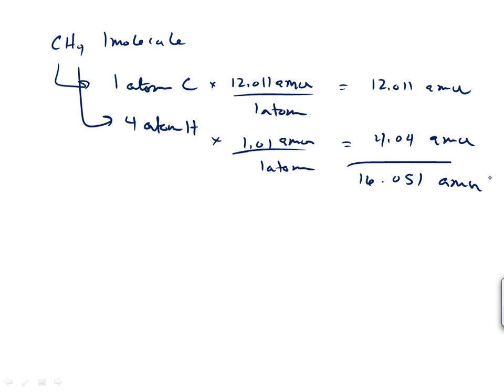Now this is where significant figures comes into play. We only did to the hundredth place here, so we can only report to the hundredth place, so my mass of one molecule of methane is 16.05 atomic mass units. We call this molecular mass.